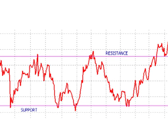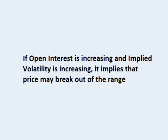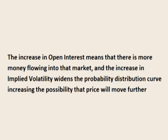Let's look at using open interest if the price of the stock or ETF is in a range. As price moves toward the edge of the range, if open interest is increasing and implied volatility is increasing, it implies that price may break out of the range. An increase in open interest means there is an increase in contracts for that stock or ETF, which means more money flowing into that market. An increase in implied volatility means that the market is stating that there is an increased chance that price will move further from its current location.